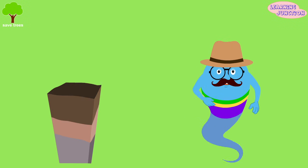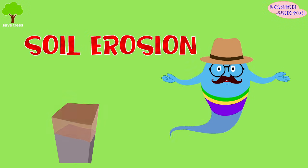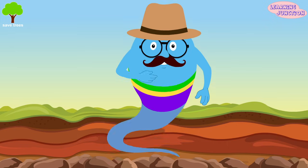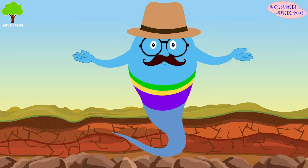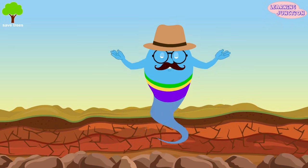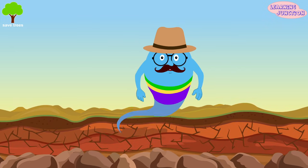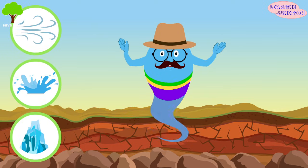Hello friends, today we'll learn about soil erosion. Erosion is the process by which the surface of the earth is worn away, mainly by the action of wind, water, and glacier.